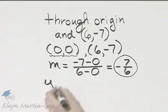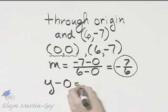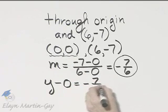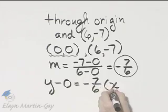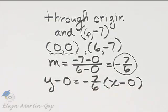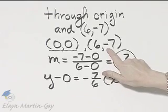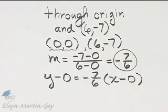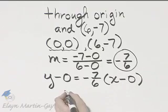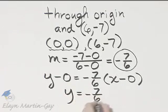So it's y minus the y value of 0 is equal to slope, negative 7, 6, times x minus the corresponding x value of 0. Once again, had you chosen this point, you would have been perfectly okay also. I chose this point. So I have y is equal to negative 7, 6, x.